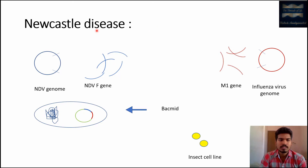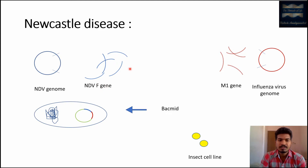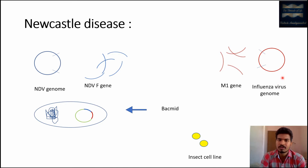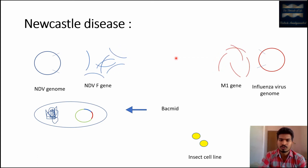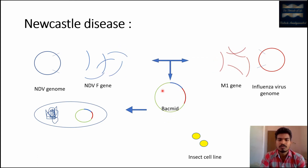This is an example of subunit recombinant vaccine preparation. The NDV F gene was obtained from the Newcastle disease virus genome, and the M1 gene — which codes for matrix protein — was obtained from the influenza virus genome. Both genes were cloned and then inserted into a bacmid, which is a baculoviral genome.